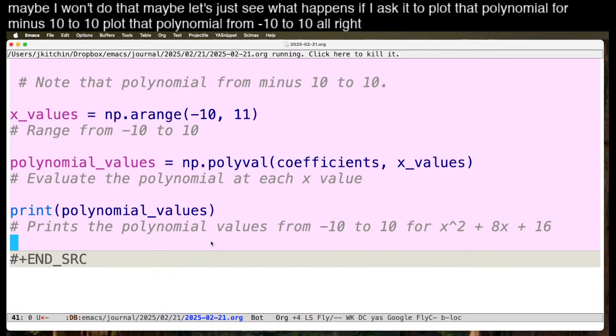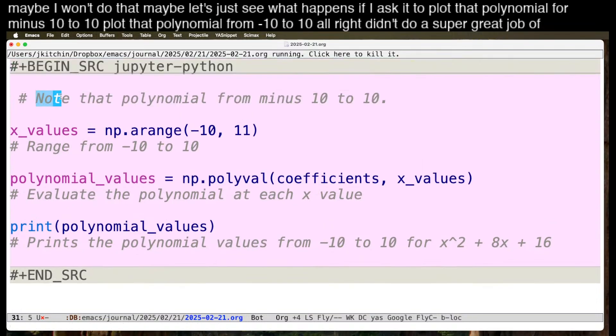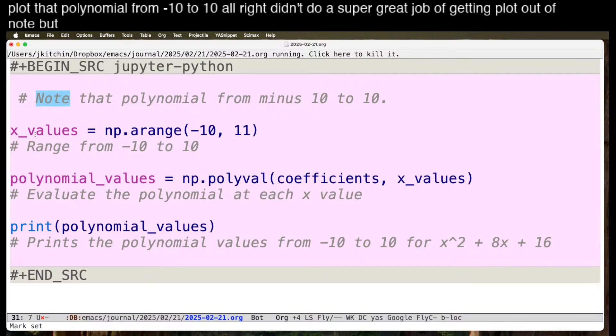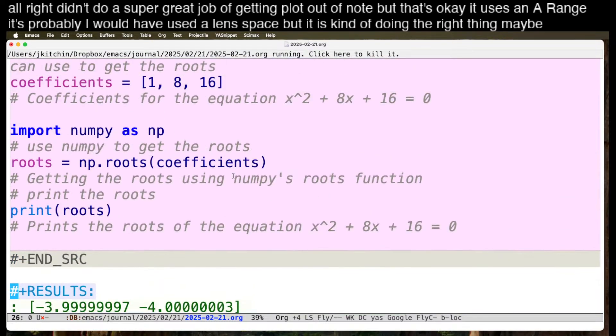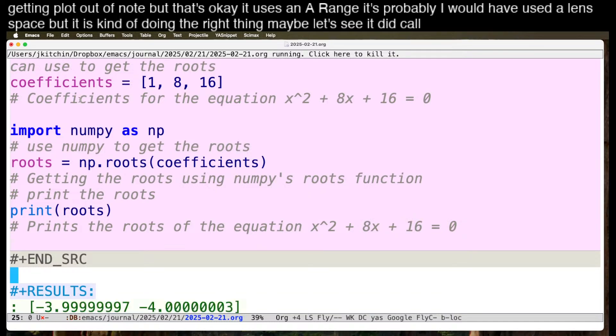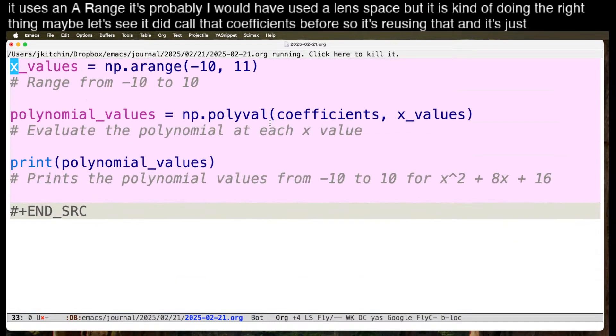All right, didn't do a super great job of getting plot out of note, but that's okay. It uses an arange. Probably I would have used a linspace, but it is kind of doing the right thing maybe. Let's see, did it use, it did call that coefficients before, so it's reusing that, and it's just evaluating the polynomial.